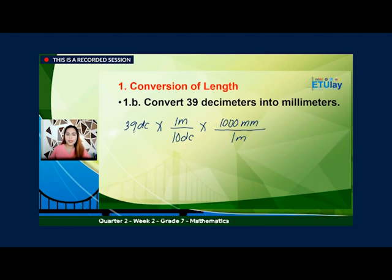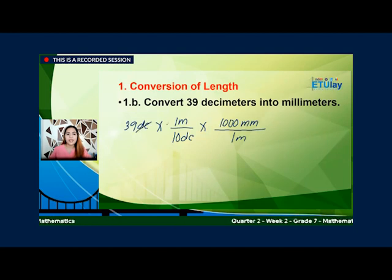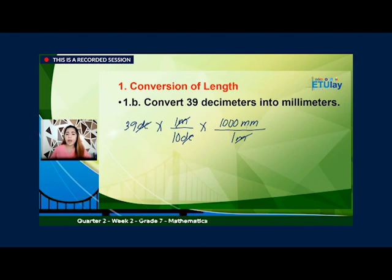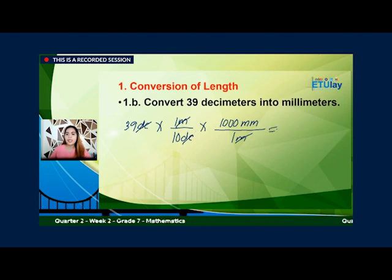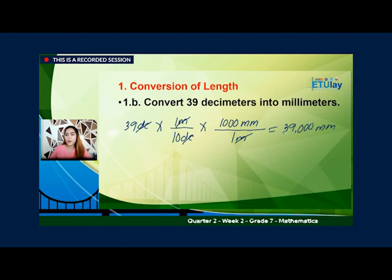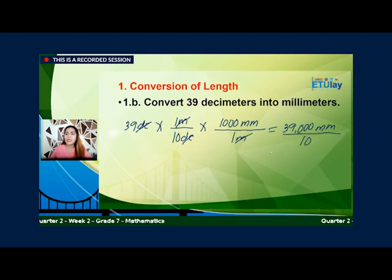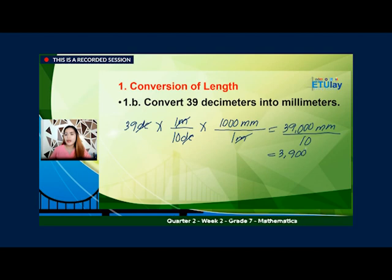From decimeters, 2 meter, 2 millimeter tayo. Cancel out na natin si decimeters, and then also meter. After elimination, ang matitira na lang sa ating unit ay yung millimeter. Then do the operation. So 39 times 1 is 39, times 1,000 is 39,000 millimeters over 10, divided by 10, that would be 3,900 millimeters. So yung equivalent ni 39 decimeters ay 3,900 millimeters.